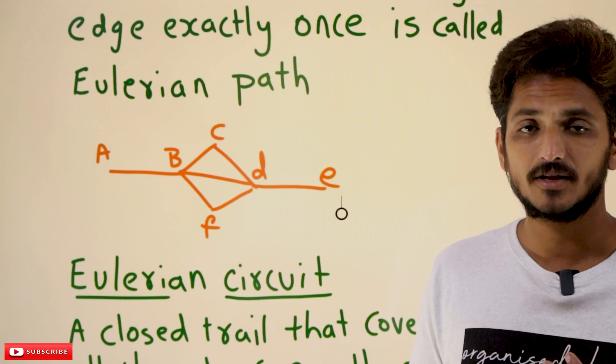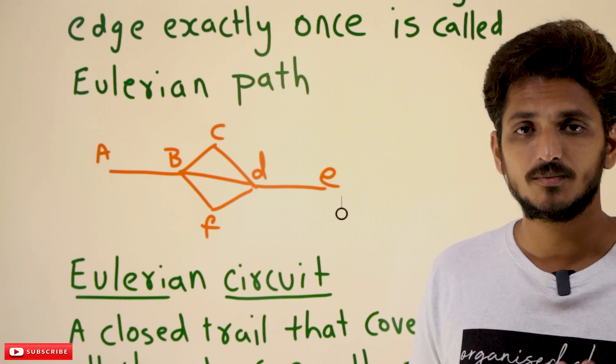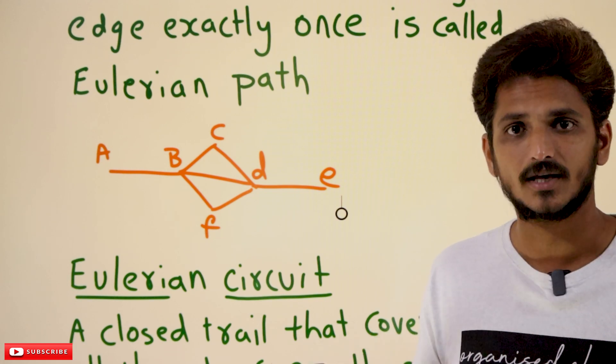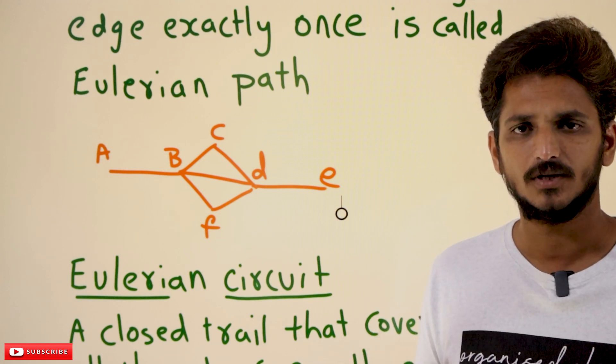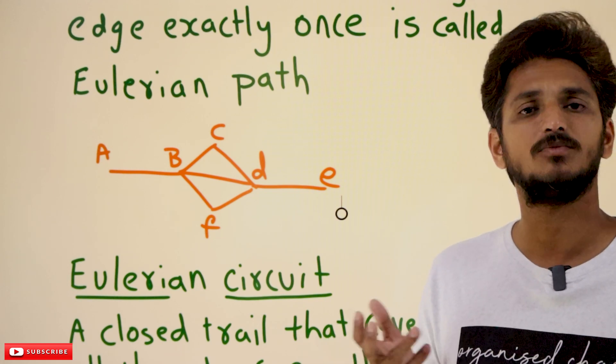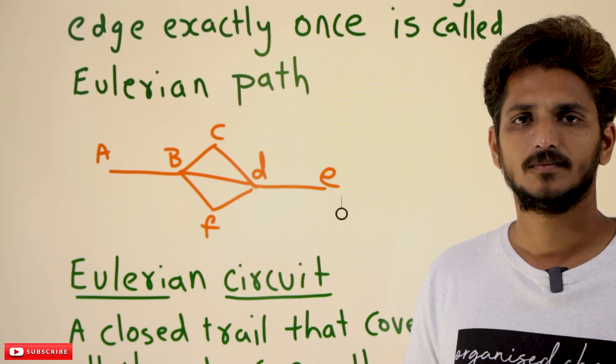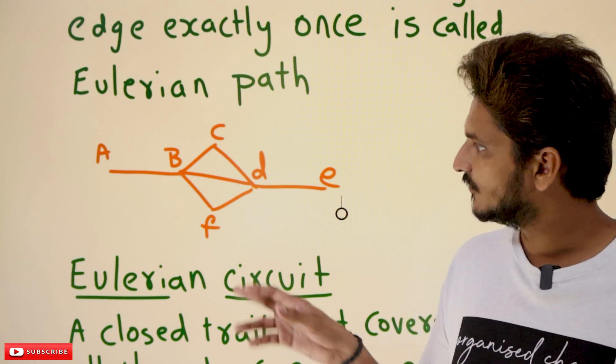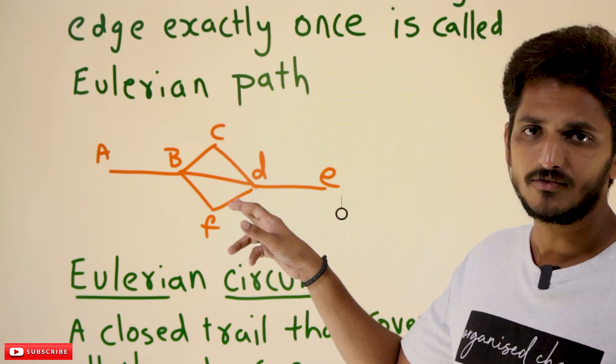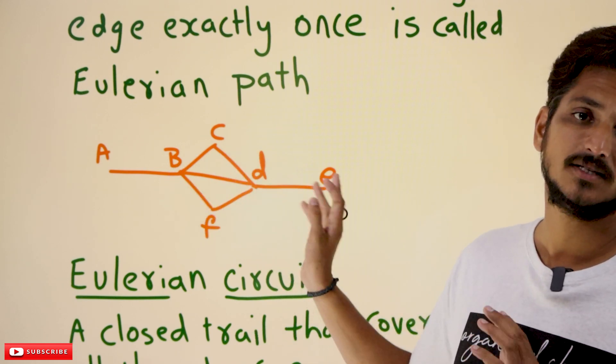It is not mandatory to have an Eulerian path for all graphs — it may exist, or it may not exist. In this graph, Eulerian path exists.